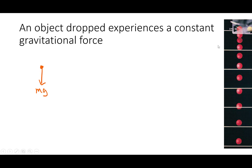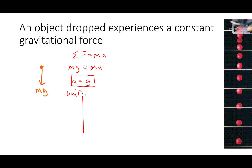We can also think about an object that's dropped in a constant gravitational field. In this case we have one force acting — gravity. From Newton's second law, the sum of the forces equals mA. There's only one force, so mg equals mA. Cancel out mass, we get our acceleration is just equal to the acceleration due to gravity. Which means we have uniformly accelerated motion and we're not going to travel equal distances in equal amounts of time — our velocity is going to change by an equal amount in an equal amount of time. So our distance is going to increase quadratically.